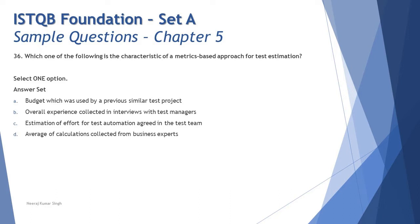Now let's look at the options. Option A says 'budget which was used by previous similar test project' — this could be a matrix-based approach for test estimation because it's previous project data and can be a great source of information through calculations or written data.